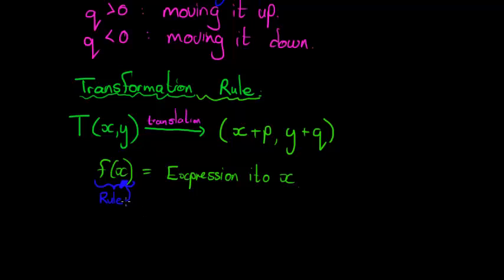It's a rule applied to x, and when that rule is applied to x we find a value of y. This is similar to that. This does not mean T is multiplying the coordinate (x,y). This means T is a rule that transforms the coordinate (x,y).